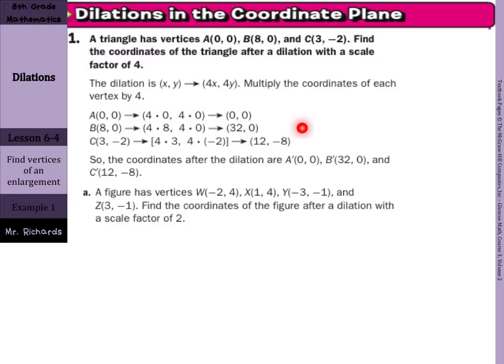Now your turn. A figure has vertices W at (-2, 4), X at (1, 4), Y at (-3, -1), and also Z, don't forget Z at (3, -1). Find the coordinates of the figure after dilation with a scale factor of 2.